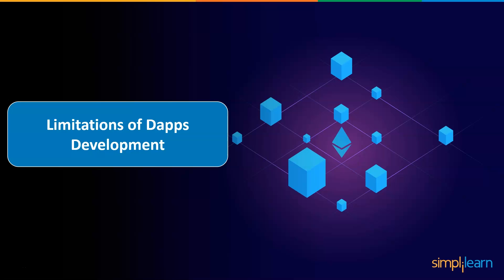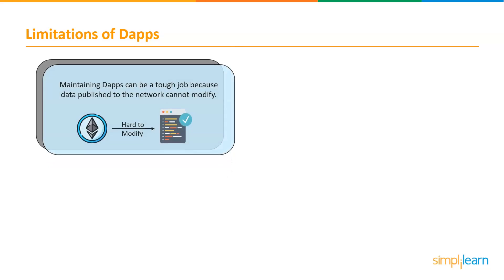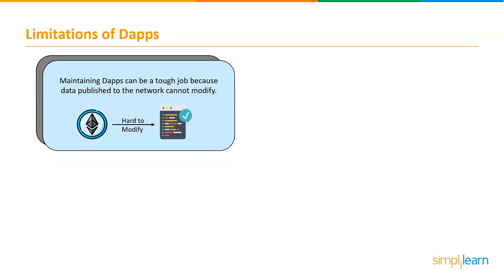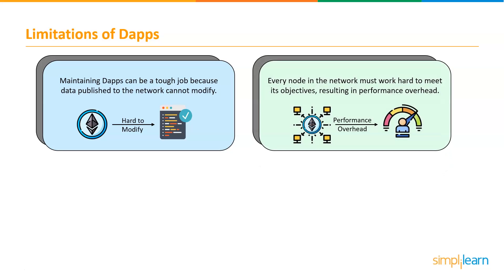Now let's understand the limitations of DApps development. Maintaining DApps can be a tough job because code and data published on the blockchain network is very hard to modify. To achieve the high levels of security, integrity, transparency, and reliability that Ethereum aspires to, every node of its network needs to run and store every transaction, which leads to huge performance overhead.